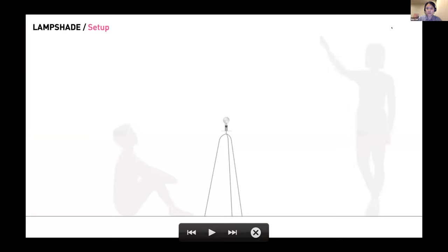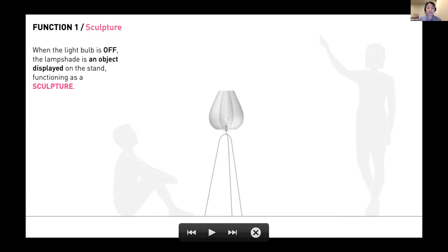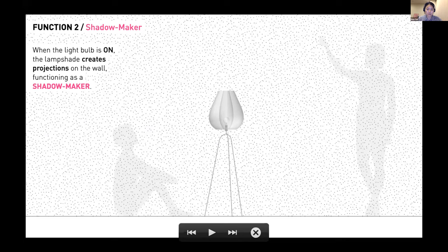Thank you for coming today to attend our presentation. My project is called Lampshade. The basic setup I'm envisioning is a stand with a light bulb sitting on a plate. On this plate, there will be an inner bounding surface and an outer bounding surface that enclose the light bulb. The thickness between the two surfaces forms the lampshade. There are two main functions of the lampshade. The first one is it acts as a sculpture when the light is turned off. When the light bulb is on, it casts projections on the wall functioning as a shadow maker. Because of this dual functionality, I've divided my presentation into two parts.